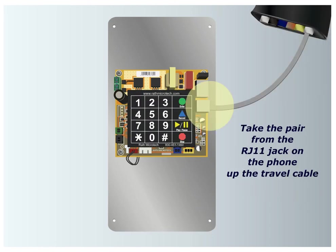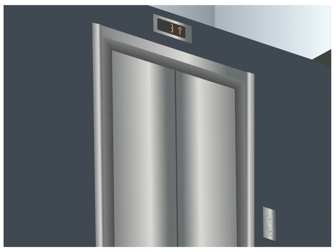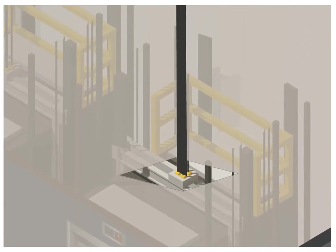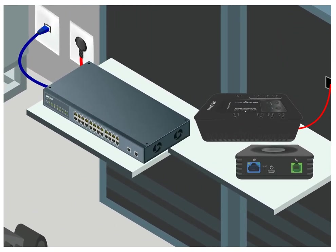Step 2: Take the twisted shielded pair from the RJ11 jack on the phone up the travel cable to the 2100 VOIP, either installed in the machine, electrical, or network room on that floor. Connect the pair to the FXS port on the 2100 VOIP.